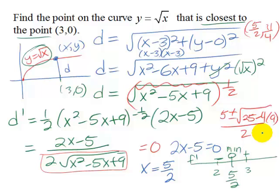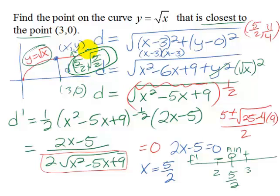Alright. So the point where the curve y equals square root of x is closest to the point (3,0) is going to be this point right here is going to be 5 halves for the x. And then we just need to have the square root of 5 halves for the y. And there's no reason to rationalize in calculus. So that's a good way to leave it.